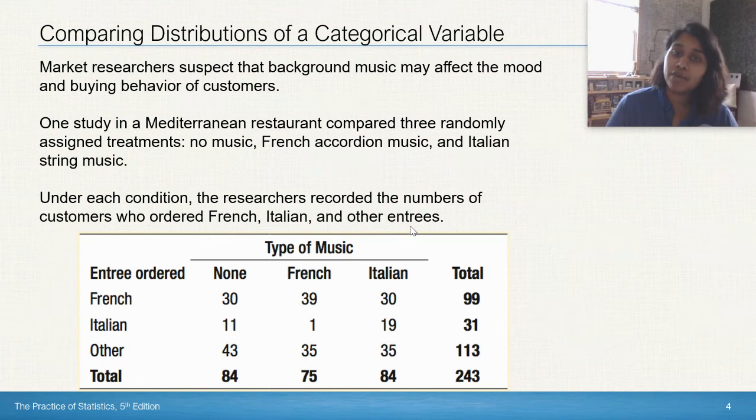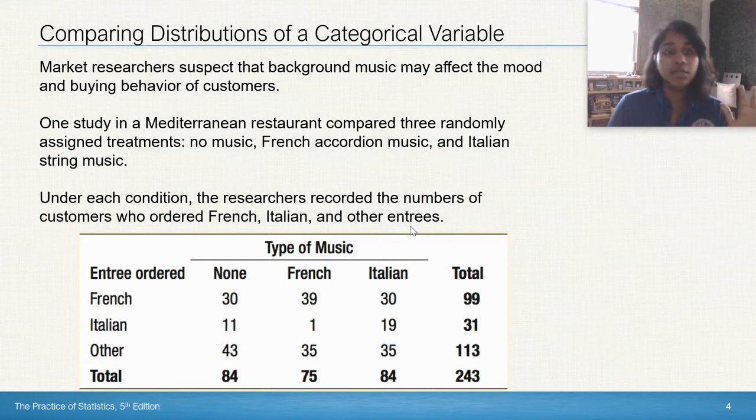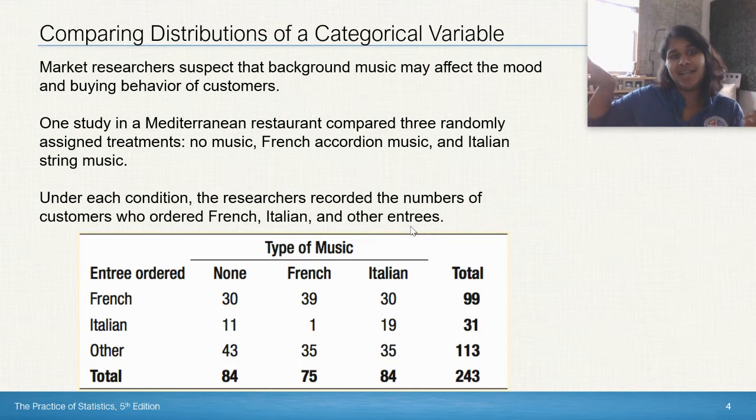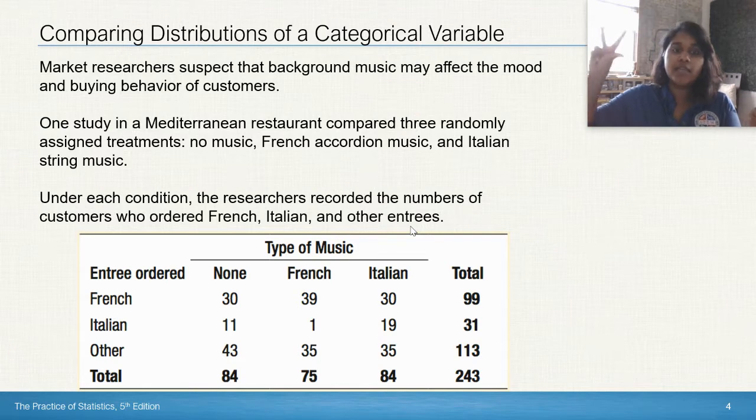Market researchers suspect that background music may affect the mood and buying behavior of customers. They go to a Mediterranean restaurant and they compare three randomly assigned treatments: no music, French accordion music, and Italian, to three more kind of not really treatments because they're not choices that the customers have, and they get to order French, Italian, or any other entree. And so they record that.